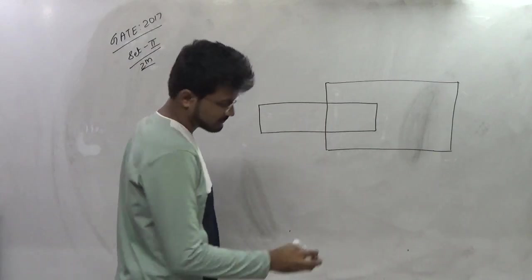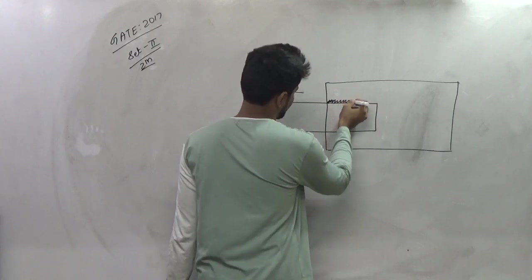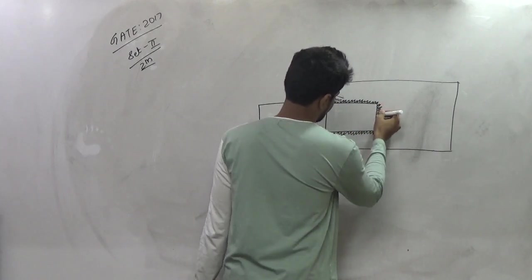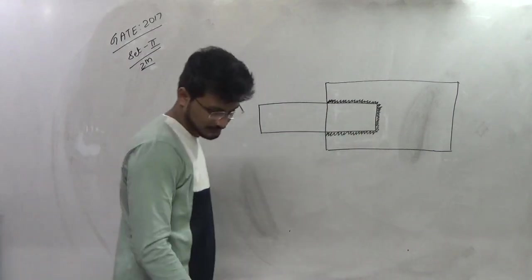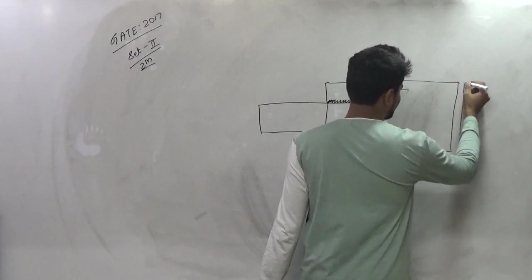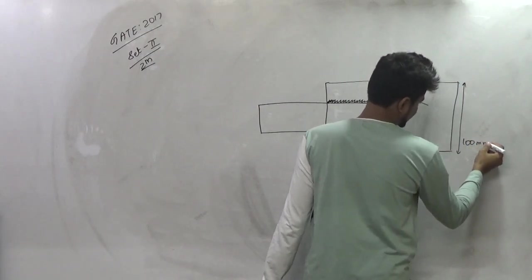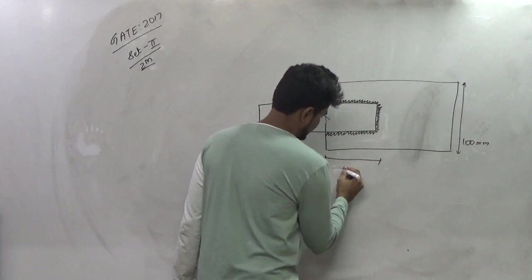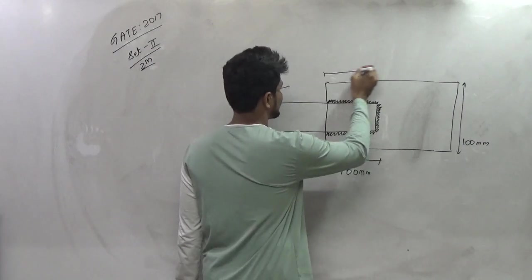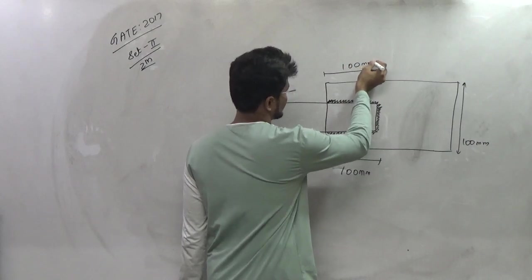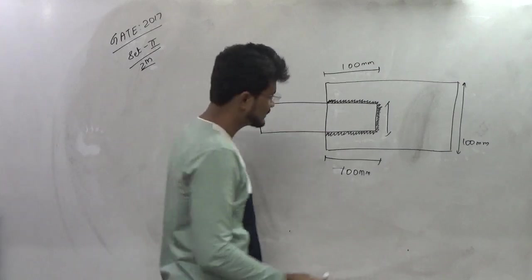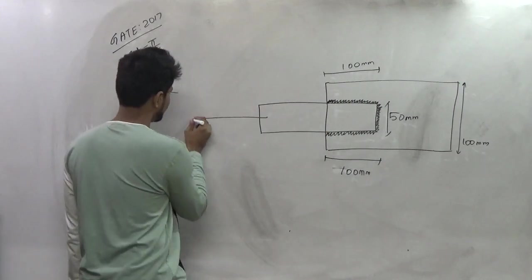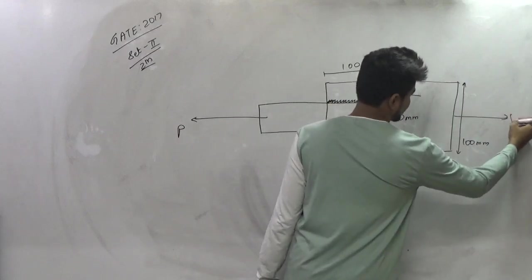So these two plates are connected by the help of fillet weld. The width of this particular plate is given as 100mm. Then this value is 100mm, this is also 100mm. This length of the weld is given as 50mm. Load is applied in the longitudinal direction. This is P, this is also P.